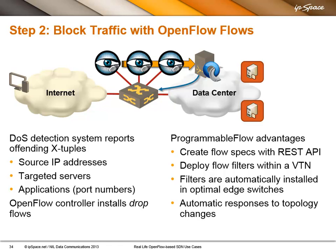The appliances can tell you they've detected a denial of service attack. At that point, you get this data from the appliances — via REST API — and either the appliances themselves or a small integration script triggers API calls that tell the controller to modify the flow list on the ingress port to install a drop entry. If you use Programmable Flow, the appliances and your script don't have to worry about the exact ingress edge port. They just tell the Programmable Flow controller the filter needed for a particular tenant, and the controller figures out where that tenant is and deploys the filters automatically on the correct edge port.